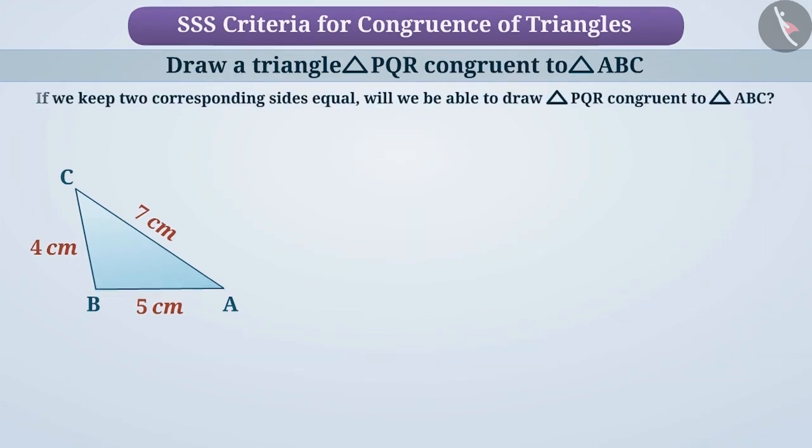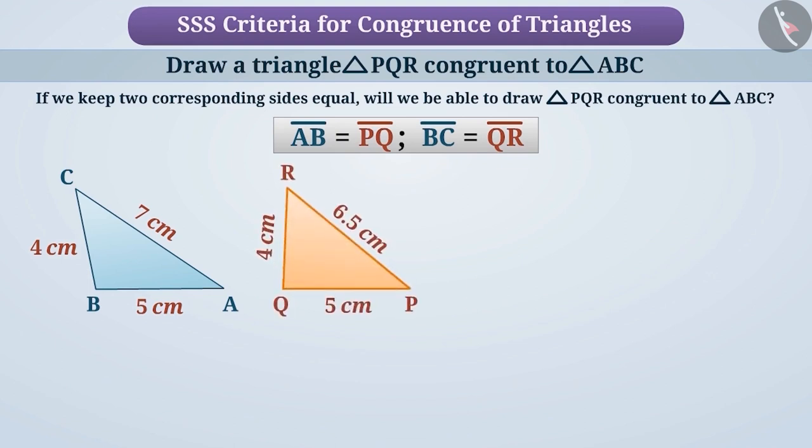Similarly, if we keep two corresponding sides equal, will we be able to draw triangle PQR congruent to triangle ABC? Think for a while. Let me tell you. If we keep the side AB equal to PQ and the side BC equal to QR, then we can draw triangle PQR in different ways.